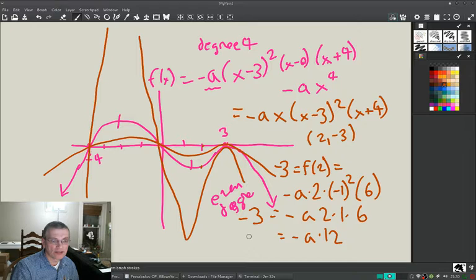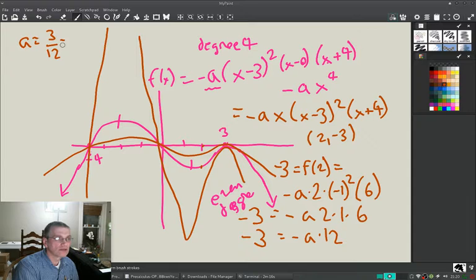All right, so we're almost done. Let's see, minus a times 12 equals minus three. Well, those minus signs cancel off, we'll divide through by 12, and so we're left with a equals 3 over 12, which equals divide both by three, one over four. So notice it's positive because we had the minus sign out here.